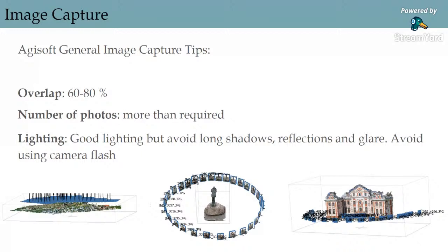The Agisoft webpage has recommended tips for image capturing. Overlap is very important — they suggest using 60 to 80% overlap, meaning 60% of the object in one image should also be visible in the next image. The number of photos you take will vary depending on the object, but it's best to take more than you feel is required in case some don't turn out well or the software is unable to align them. You also need to consider lighting — make sure there are no visible light sources within the photo frames, and if you are outside, it's best to capture images on a cloudy day so there are no shadows on the object.